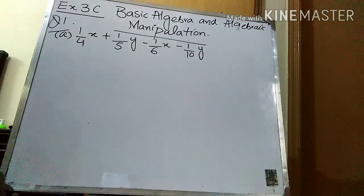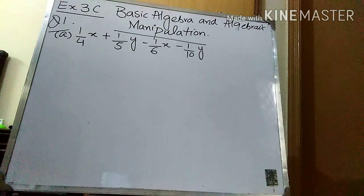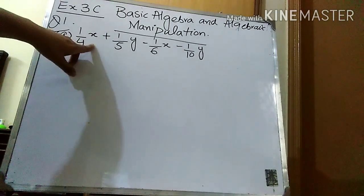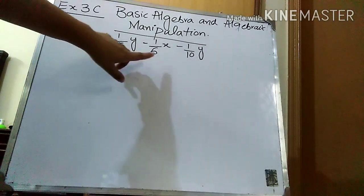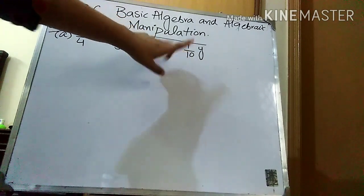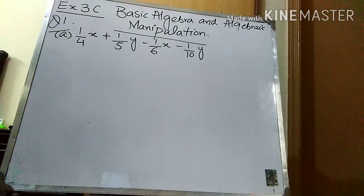In the new book it's chapter 3, but in the old book it's chapter 4. So I'm going to explain question number 1, and the first part is 1/4x + 1/5y − 1/6x − 1/10y. The exercise is 3c, and in the old book it's 4c.